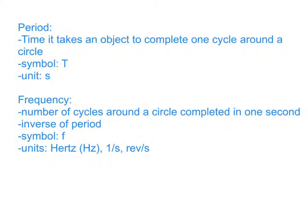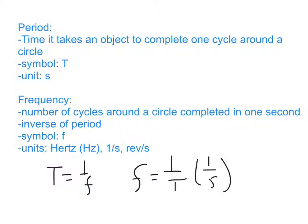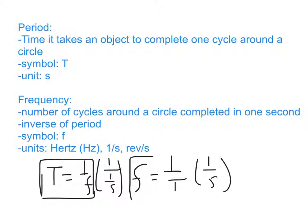The equations for period and frequency are inverses of each other: period equals one over the frequency, and frequency equals one over the period. You have to be careful when reading a problem whether it gives you period or frequency, so you know what to use. Because period's unit is seconds, frequency works out to one over seconds.